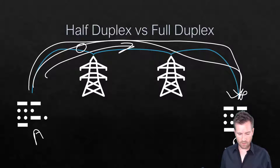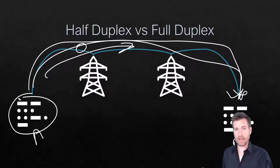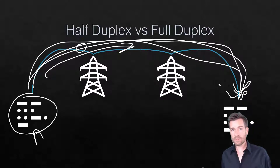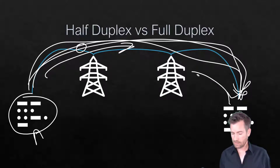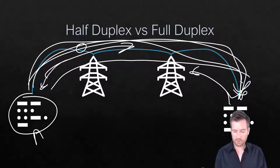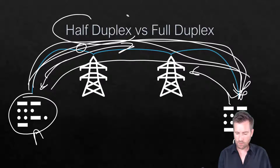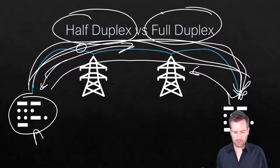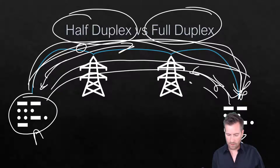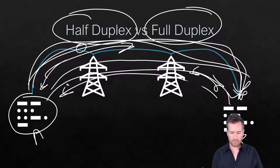With a telegraph, when you're on one side communicating and information is being sent to the other side, no other communication can happen — the telegrapher on the other end cannot send information back. You'd have to run a whole separate line with separate equipment to transfer data in both directions at the same time. Half duplex means data can only flow in one direction at a time and must stop before information can flow back; full duplex means sending and receiving can happen simultaneously.